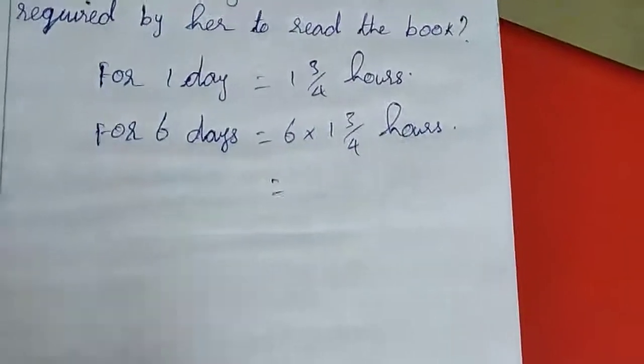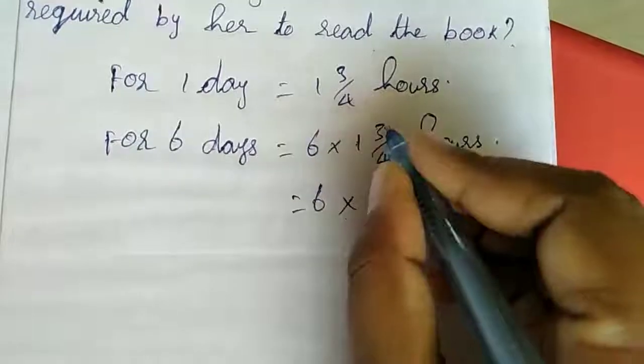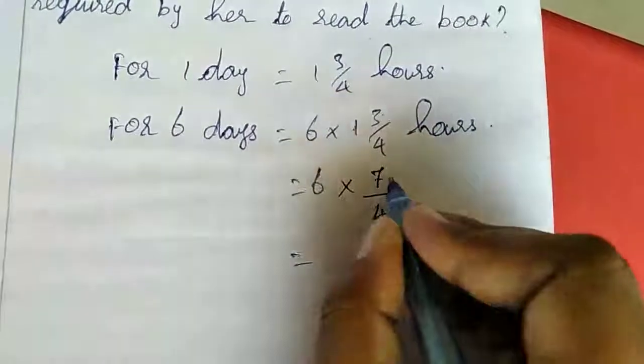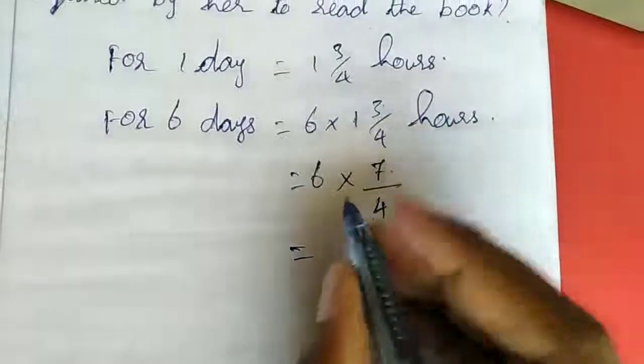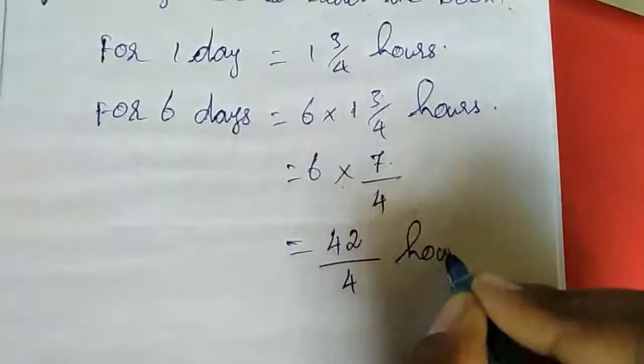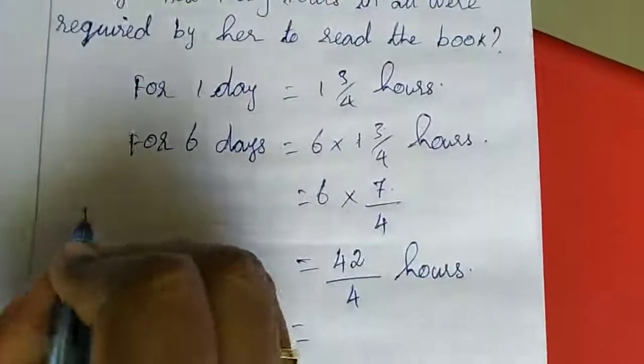Now I am going to multiply this. 6 into, 4 ones are 4, 4 plus 3 is 7, so 7 by 4. If you multiply this 6 and 7 you will get 42. 42 divided by 4 hours. This one we can change as a mixed fraction also. That is no need.